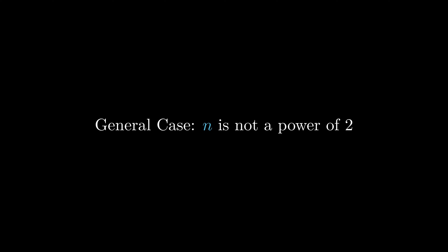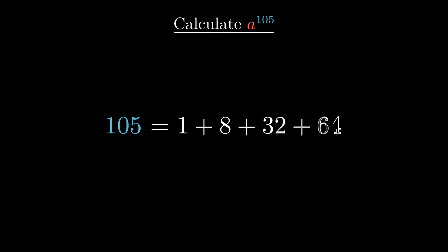Now let's look at a general case. When n is not a power of 2, what should we do? For example, when n is equal to 105, we can see that even though 105 is not a power of 2, we can write it as the sum of powers of 2. In this case, 105 is equal to 1 plus 8 plus 32 plus 64.